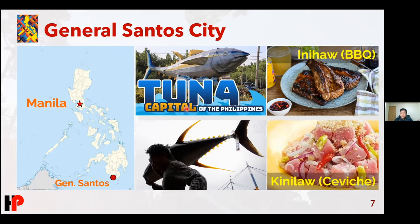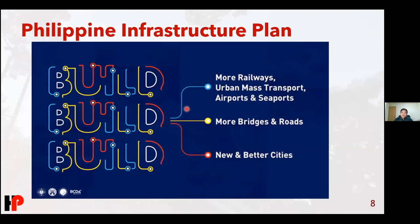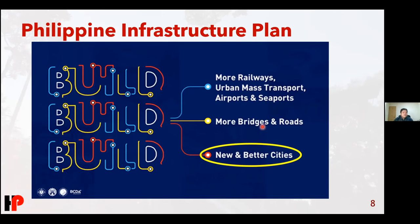Some of those projects I mentioned are actually part of the Philippine infrastructure plan. Currently there is a lot of push towards having more projects, including railways, roads, bridges — where I usually dealt with before coming to Japan — and of course, new and better cities. New and better cities have better transportation, better living, and better job opportunities — trying to move people from Manila to other areas of the Philippines. This is called the Build, Build, Build program of the Philippines.